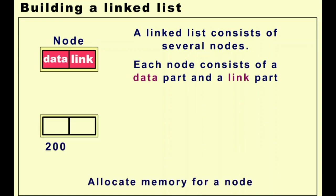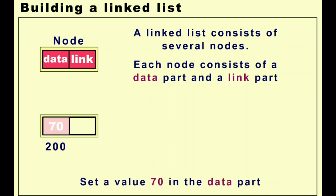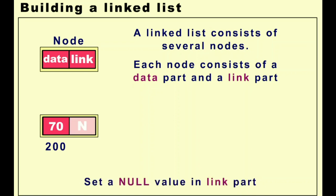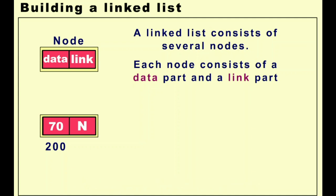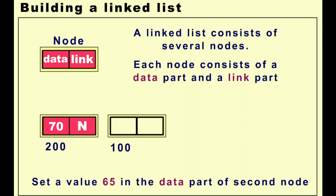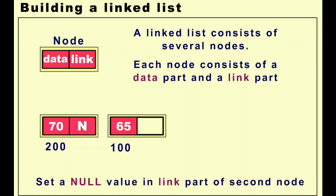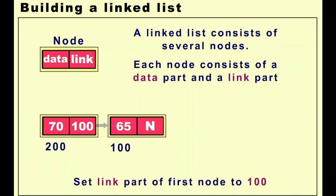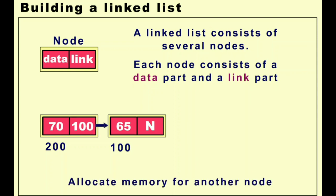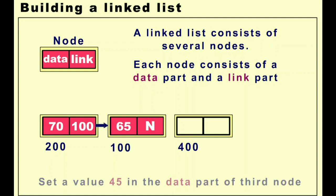Let's allocate memory for the first node at memory location 200. We store the value 70 there, and in the link part we store the address of the next node. We create another node at memory location 100, store value 65, and then update the link part of the first node to 100, which is the address of the second node — they are now connected.